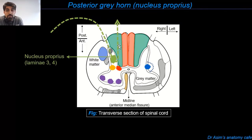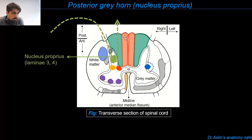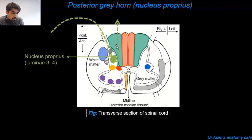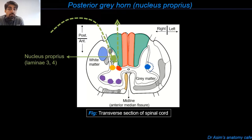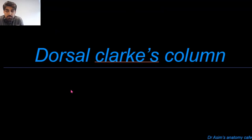The sensory information of vibration, proprioception, and two-point discrimination is carried up to higher brain centers through the posterior white column, which is divided into two sub-regions: the fasciculus gracilis, color coded in red, and the fasciculus cuneatus, color coded in green. Along their course, the first-order neurons ascending inside the posterior white column give a neuronal branch to the cell bodies inside the nucleus proprius, thus informing these cells about the sensory information being carried up to the higher brain centers.